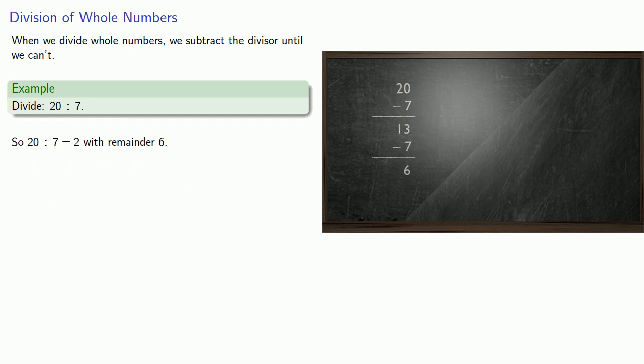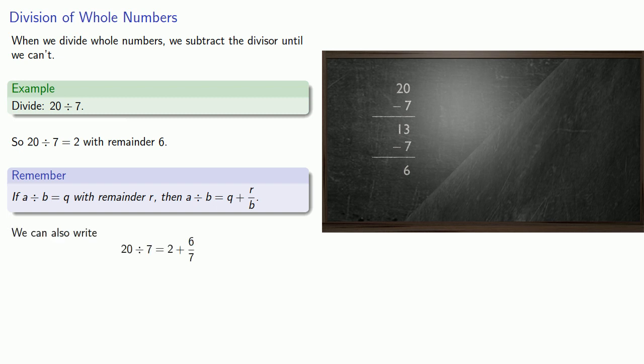Better yet, remember that if A divided by B is Q with remainder R, then we can also say A divided by B is Q plus the fraction R over B, remainder over divisor. And so we can also say that 20 divided by 7 is 2 plus 6 sevenths. The thing to recognize is that when we divide polynomials, we do exactly the same thing.